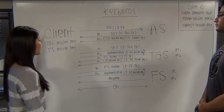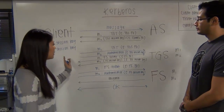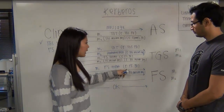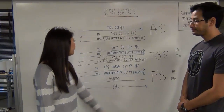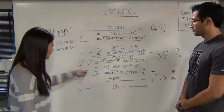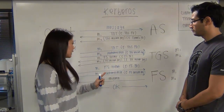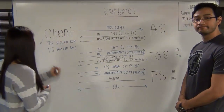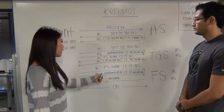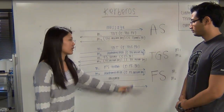After the client receives those two messages, the client will forward the file server ticket — encrypted with the file server's private key — to the file server. The client will then decrypt message two using the TGS session key to obtain the file server session key, and will forward the authenticator — containing the client ID and timestamp — encrypted with the file server session key.